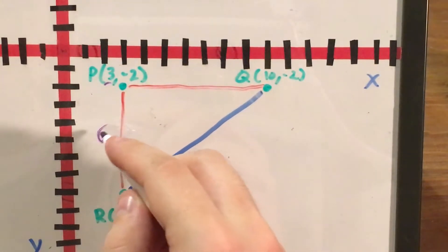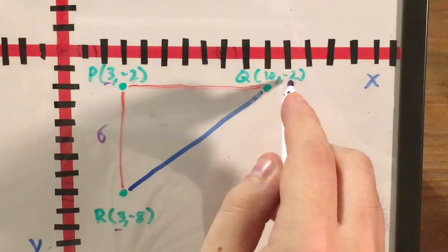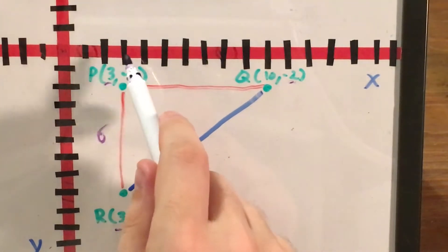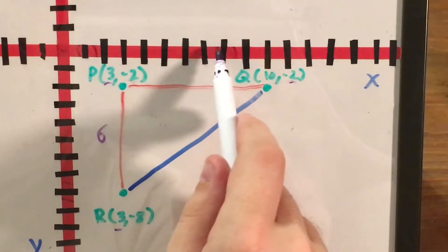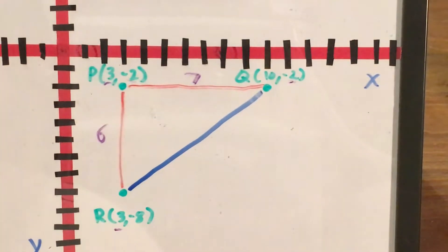And now over here point P and point Q have the same Y coordinates so they're a horizontal line. I can count 1, 2, 3, 4, 5, 6, 7 - that's the number of squares I would need to cross to get from point P to point Q.